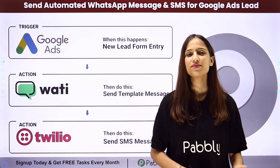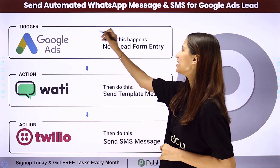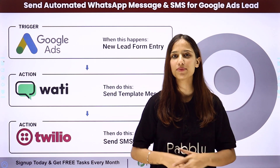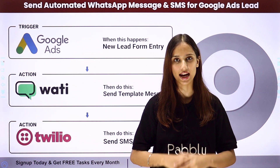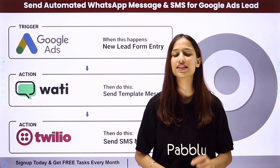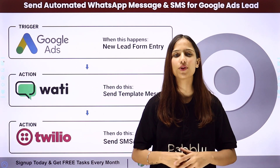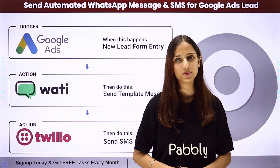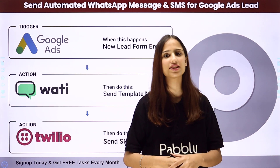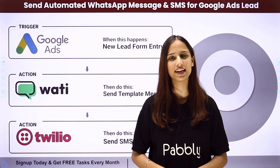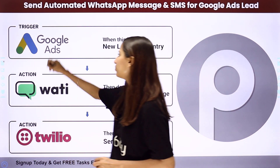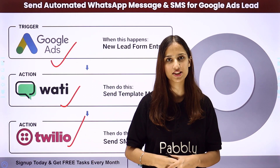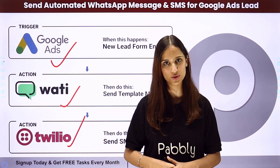Hello everyone, welcome back to Pabbly. In today's video we will understand how to send automated WhatsApp messages and SMS for Google Ads leads. I have an event management company and to promote it I am using Google Ads. Whenever I receive a new lead through Google Ads, I want to send an automated WhatsApp message along with an SMS to that lead. My trigger application will be Google Ads and my action applications will be Vati and Twilio — Vati for WhatsApp and Twilio for SMS.